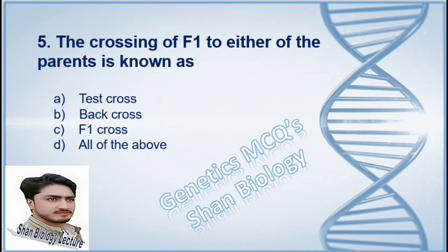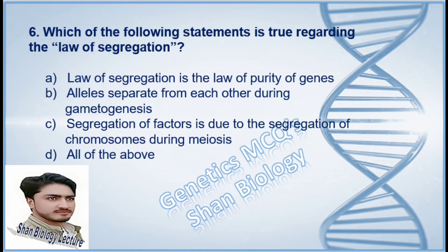Question 5: The crossing of F1 to either of the parents is known as — option A test cross, option B back cross, option C F1 cross, option D all of the above. The correct option is B, back cross.